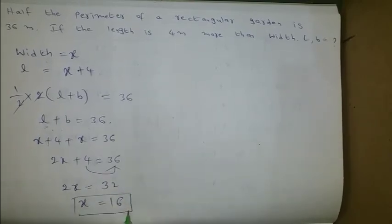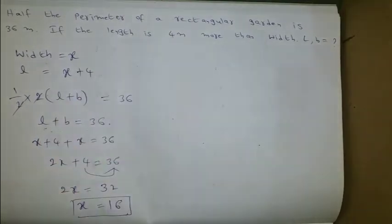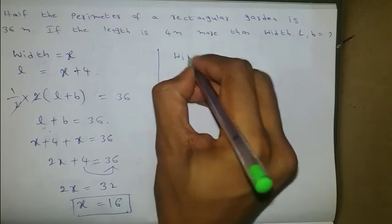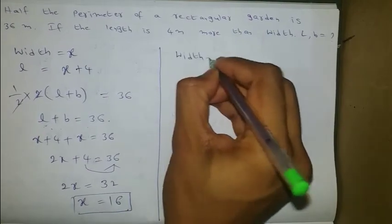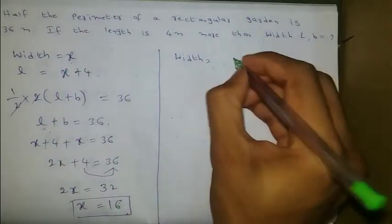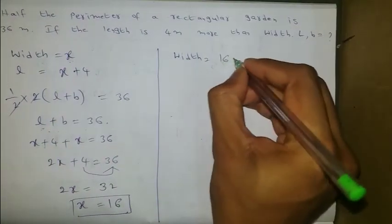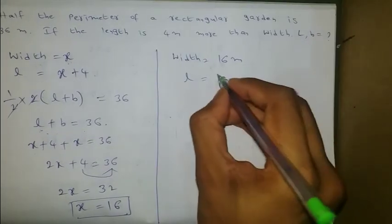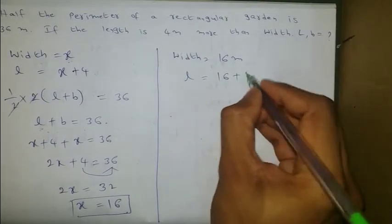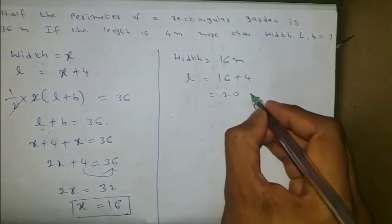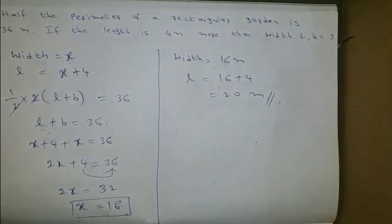x is the width, so the width equals 16 meters. The length equals x plus 4, which is 16 plus 4, equals 20 meters.